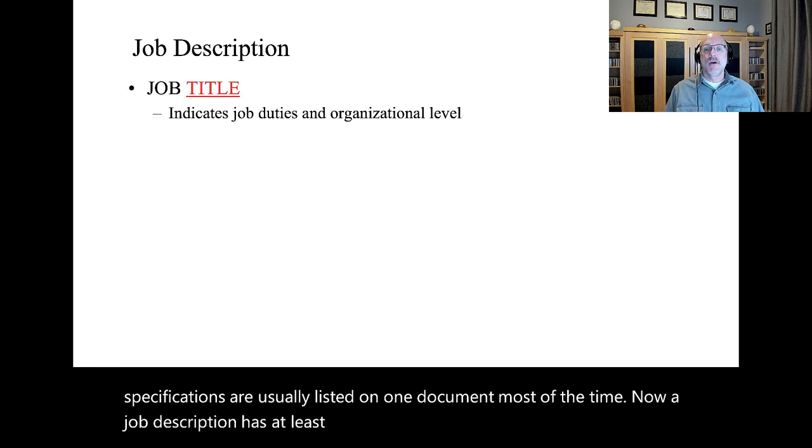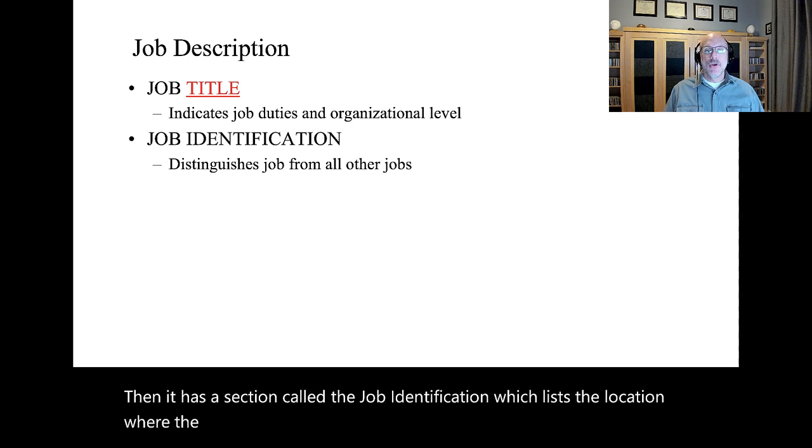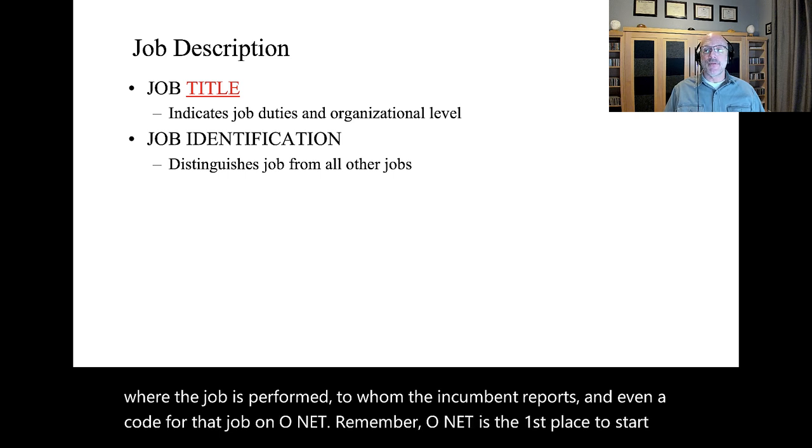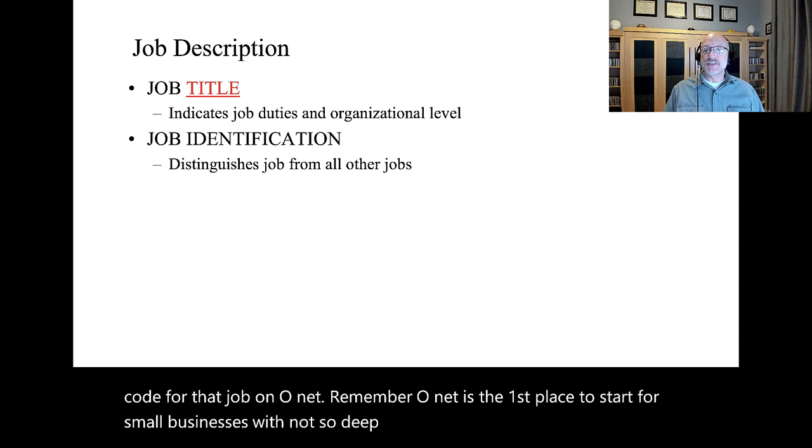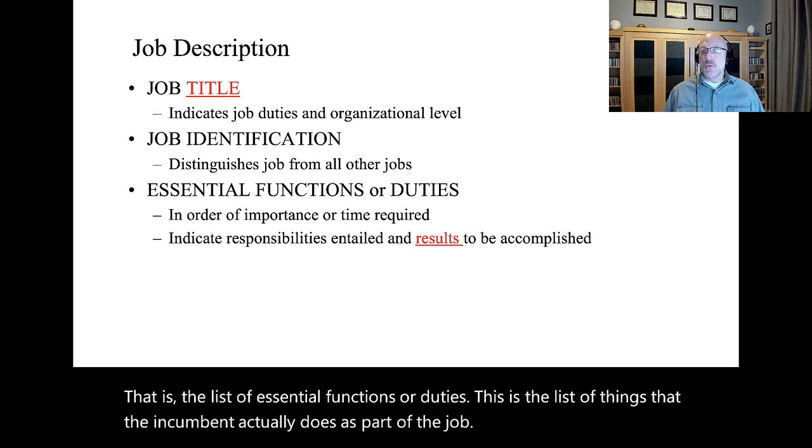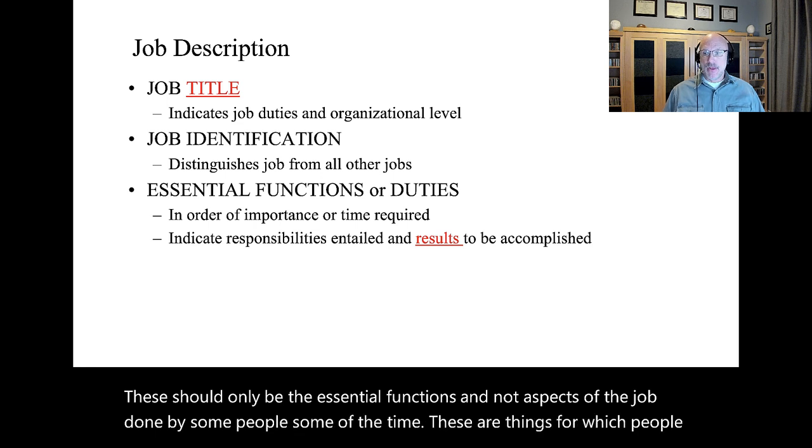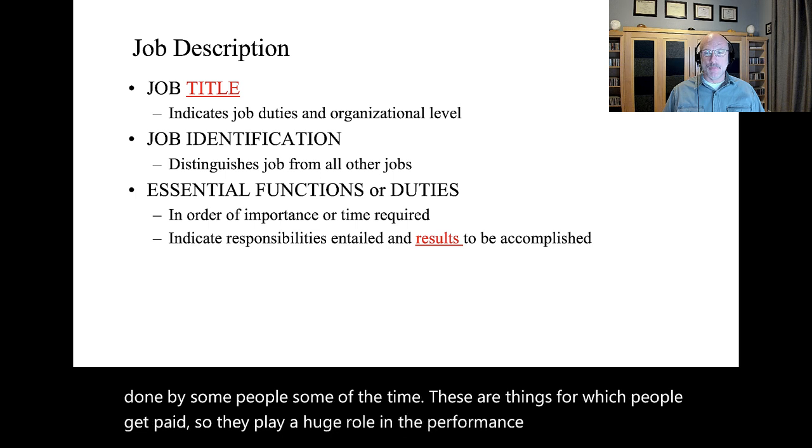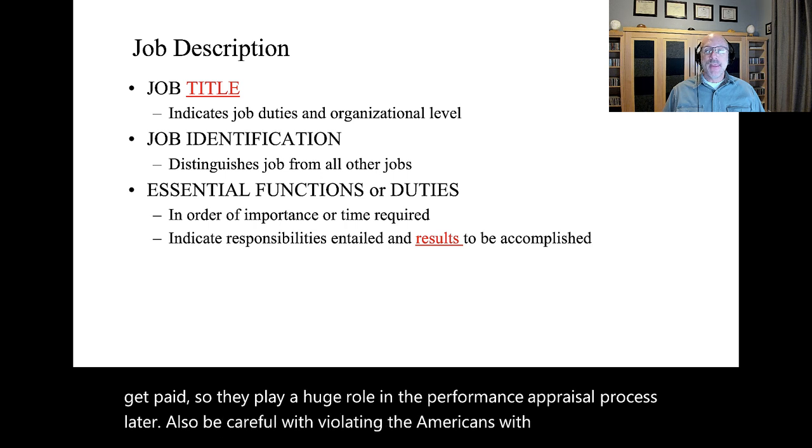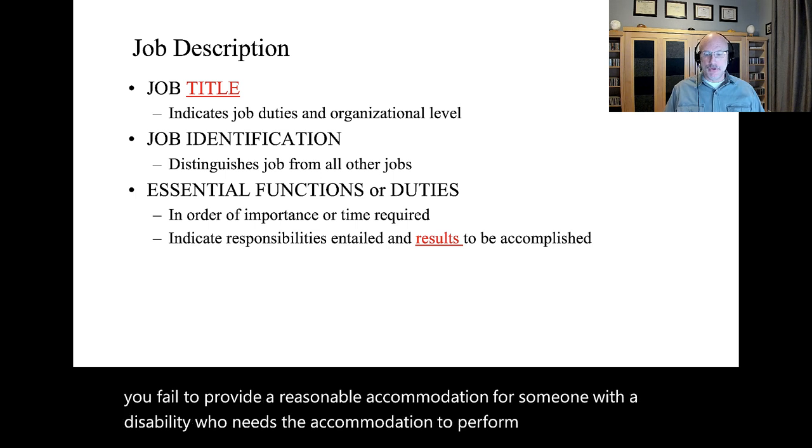Now, a job description has at least four parts. First is the job title, like welder, pipe fitter, waiter, or college professor. Then it has a section called the job identification, which lists the location where the job is performed, to whom the incumbent reports, and even a code for that job on O-Net. Remember, O-Net is the first place to start for small businesses with not-so-deep pockets. Then it is the list of essential functions or duties. This is the list of things that the incumbent actually does as part of the job. These should only be the essential functions and not aspects of the job done by some people some of the time. These are things for which people get paid, so they play a huge role in the performance appraisal process later. Also, be careful with violating the Americans with Disabilities Act if you fail to provide a reasonable accommodation for someone with a disability who needs the accommodation to perform the essential duties.